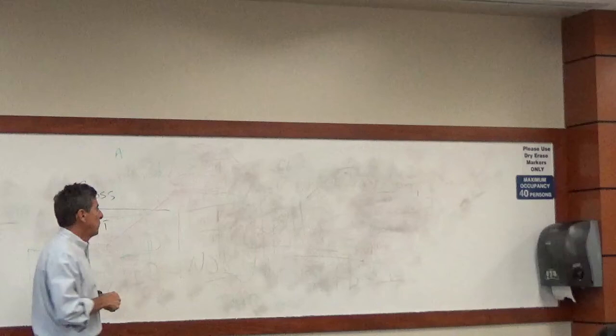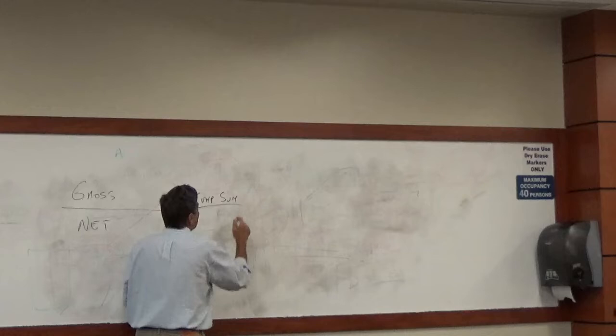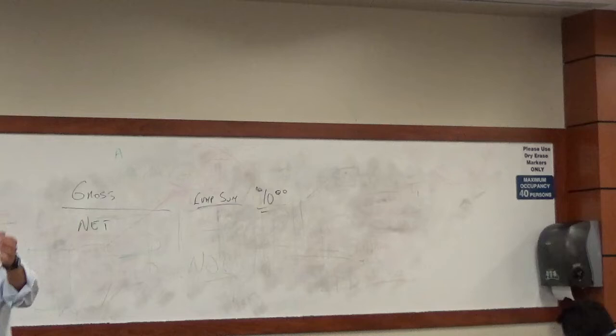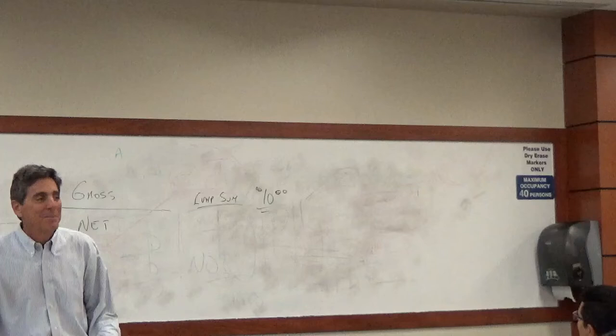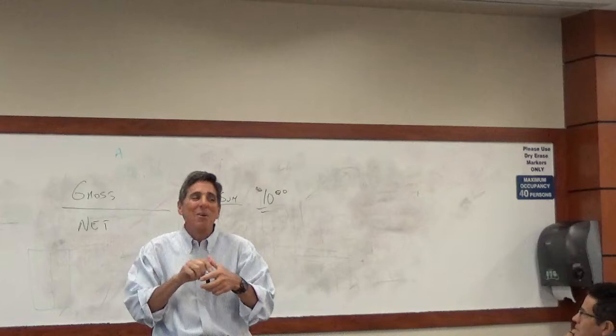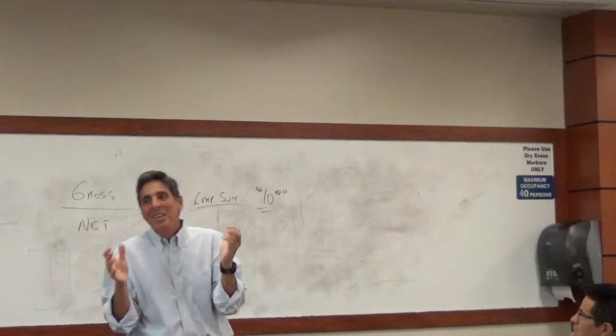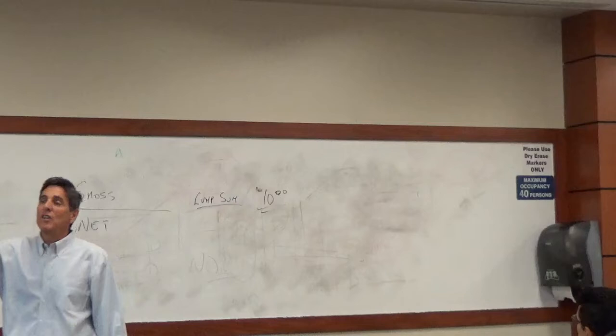In a gross lease, you pay one sum. The tenant, the lessee, pays one lump sum rate to the landlord, the lessor. So I want to pay $10 a square foot. I occupy a thousand square feet, so I pay $10,000. Is that monthly or yearly? That's annual. By business practice in this country, in commercial leases, we quote annual rates. But be careful because in Europe, they're monthly rates. In this country, that is $10 per year, so we pay $10,000 for the year.